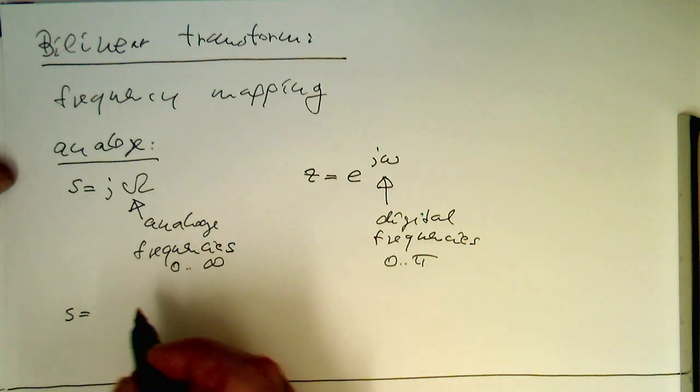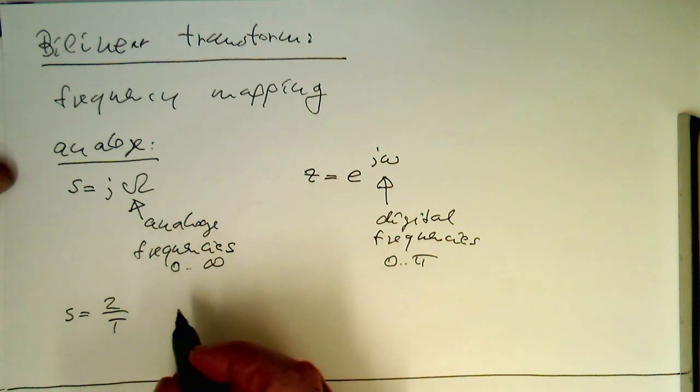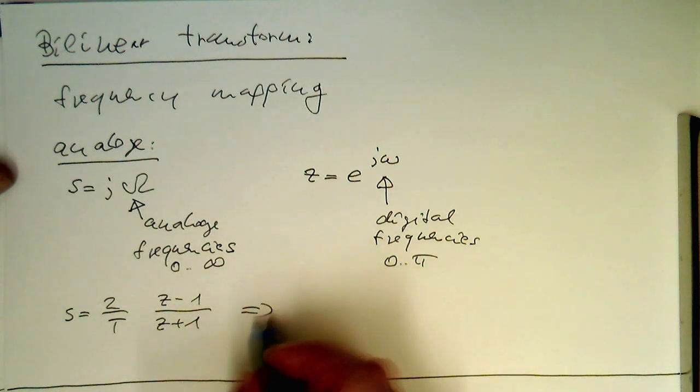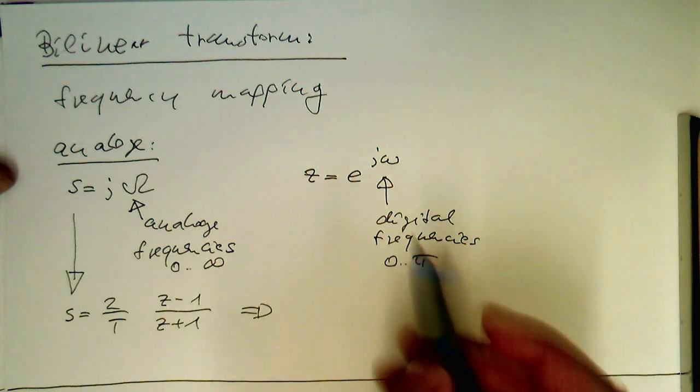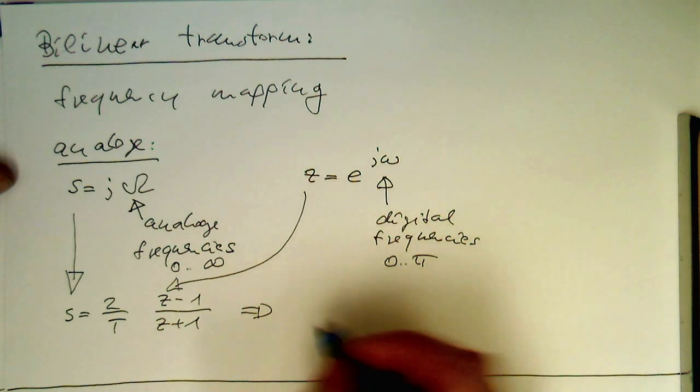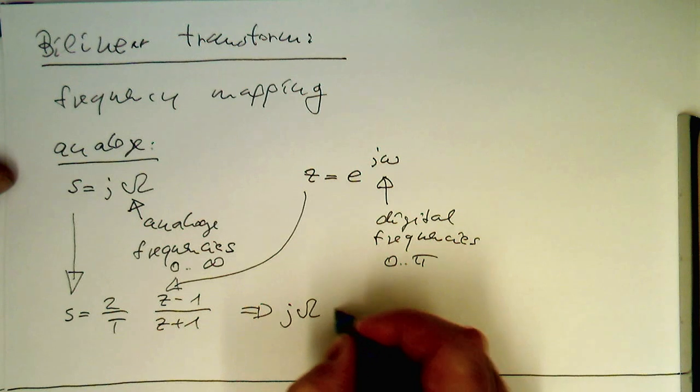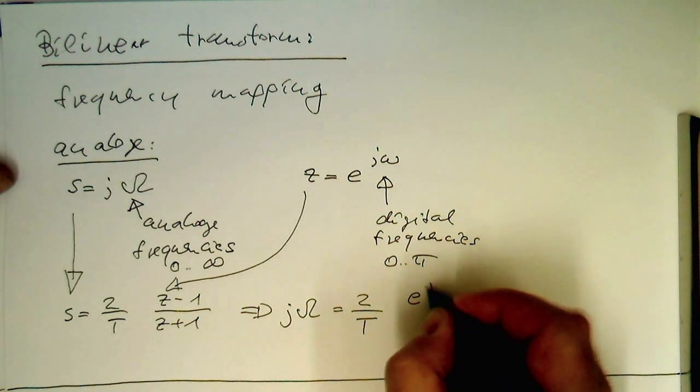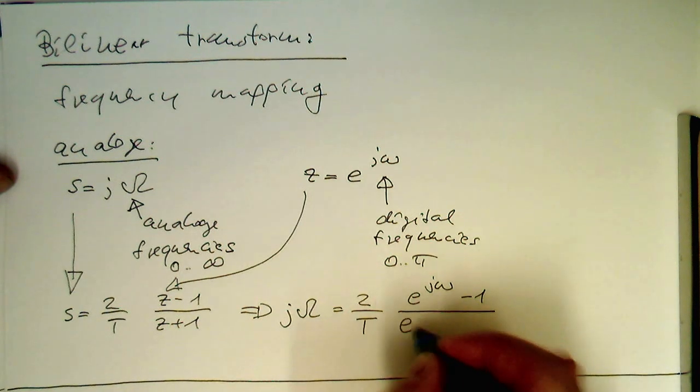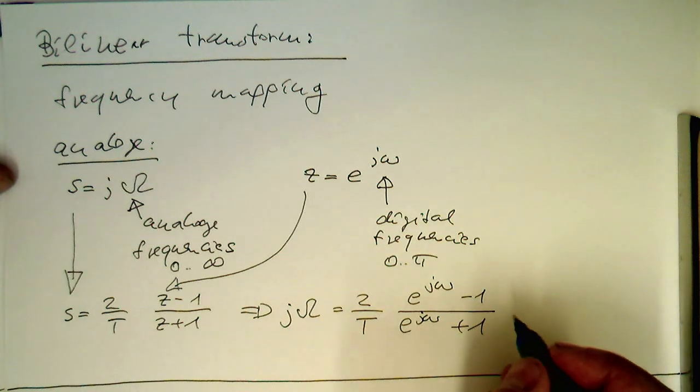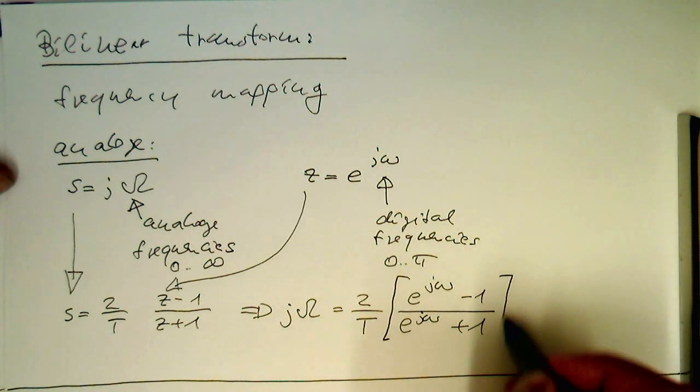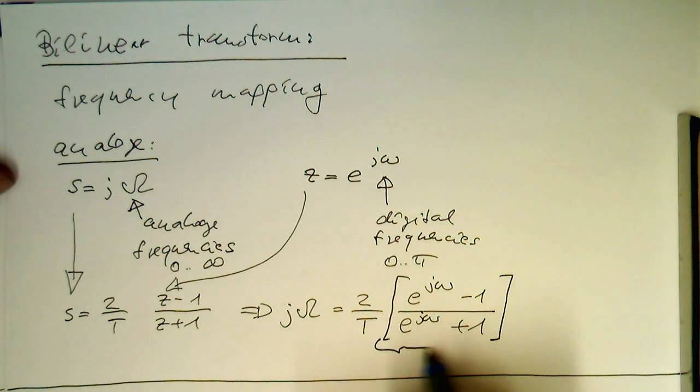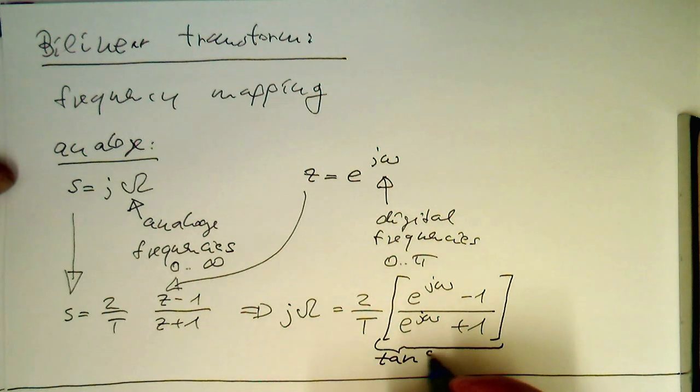So we have, remember our z-transform is 2 divided by t and then z minus 1 divided by z plus 1. So if we're substituting our s in here and our z in here, then we're getting out here j capital omega equals 2 divided by t, and then we've got here e to j omega minus 1 divided by e to j omega plus 1. So now this term here is nothing else than tangent omega half.